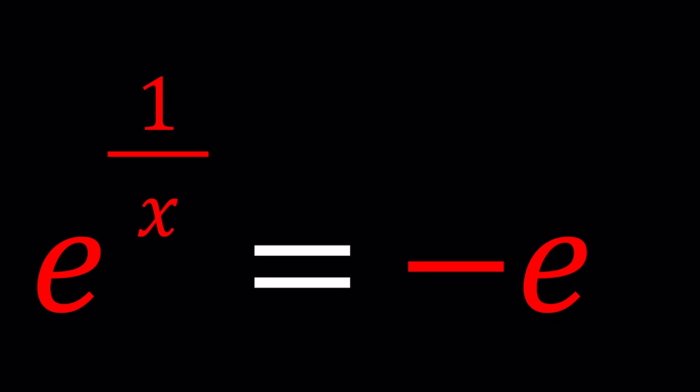Hello everyone. In this video we're going to be solving an interesting exponential equation with Euler's number. We have e to the power 1 over x equals negative e and we're going to be solving for x values.